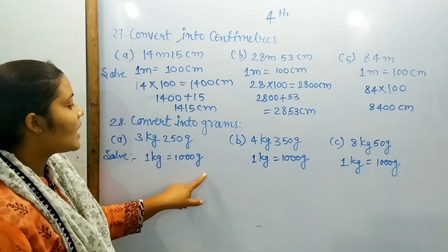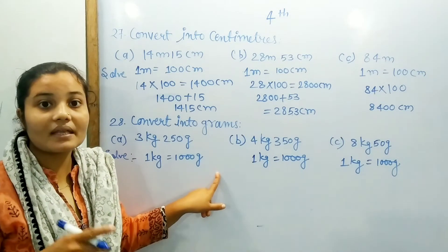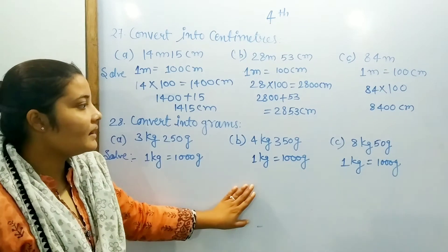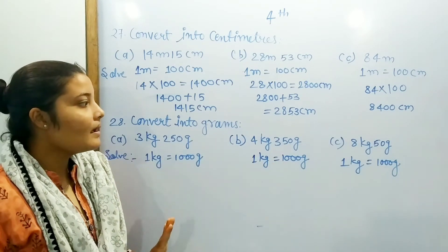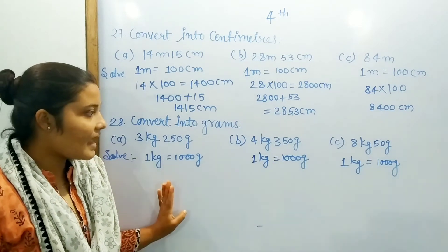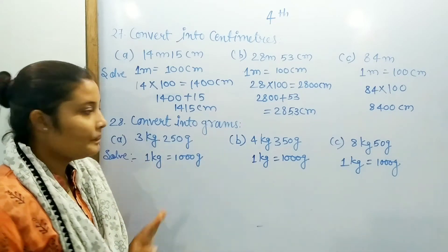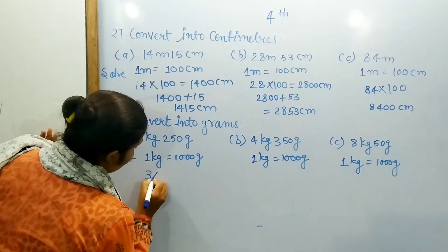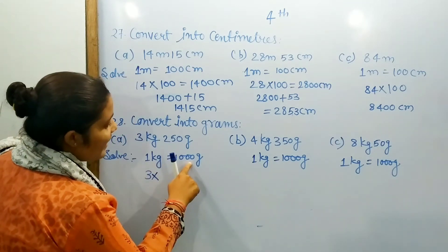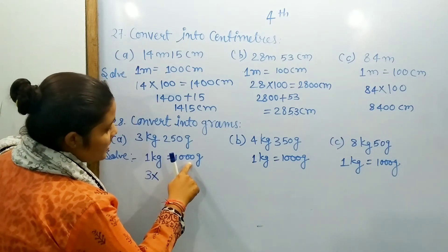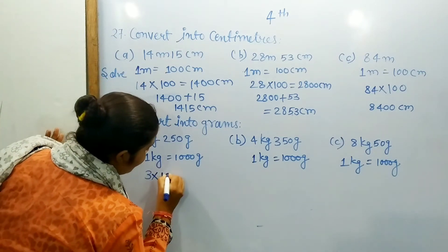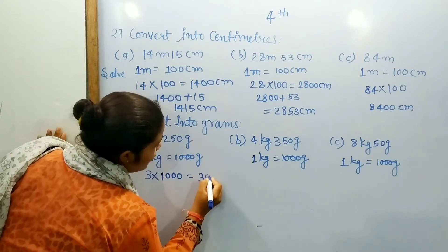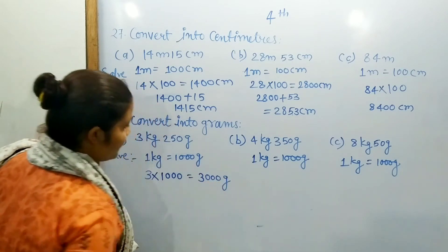1 kilogram is equal to 1000 grams. We have three conditions that we have to apply. We have to solve the problem with three kg. Three kg multiplied by one thousand grams — this is what we have to do.